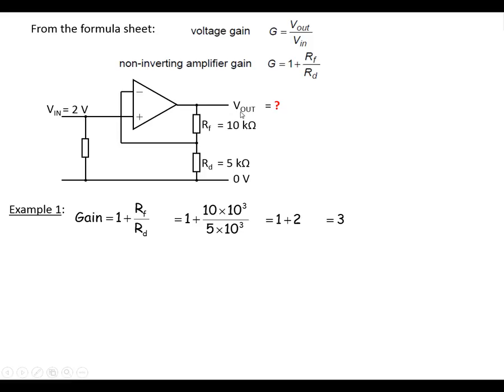Now we need to work out V out. So we're going to use this formula: gain equals V out divided by V in. We've rearranged that and we get V out is gain times V in. So we use the gain from here, 3 times the 2 volts going in. This gives us 6 volts at the output. So we know 2 volts going in, we're going to have 6 volts coming out.